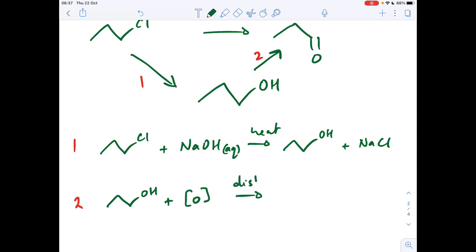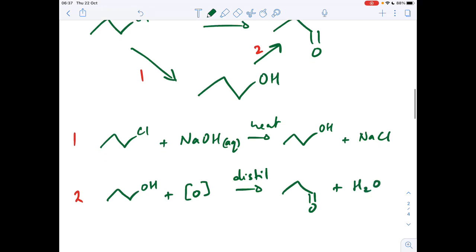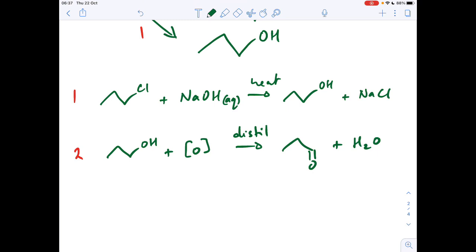So we would distill it and that would generate the aldehyde and a water molecule. So we need to specify the chemicals used to make the oxidising agent. So the oxidising agent is potassium dichromate(VI). And remember, it needs to be acidified, so we need sulphuric acid as well.